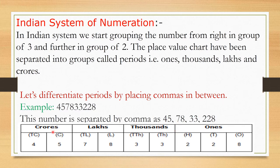Let us understand the Indian system of numeration from the chart. We can see 4 types of different periods. First is ones, second is thousands, third is lakhs, and fourth is crores. To understand the periods better, we move from right to left. The ones period consists of 3 places: 1s, 10s, 100s.